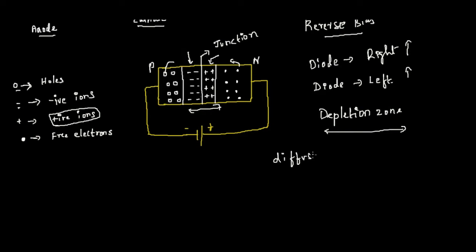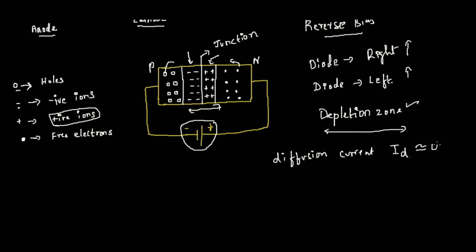Diffusion current Id is not going to be created because of this applied reverse EMF. Even if diffusion current is created due to this depletion zone, the charge carriers will not make a move, so the diffusion current is at a very very negligible value. There will be literally very few movements of electrons.